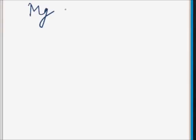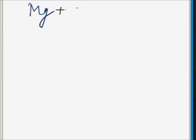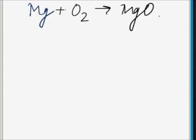What is the chemical formula of magnesium? It is Mg. And what is the chemical formula of oxygen? It is O2. So Mg and O2 are reacting to produce magnesium oxide. This is the chemical equation involving the formulae of magnesium and oxygen.